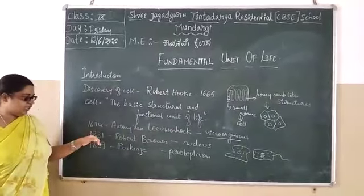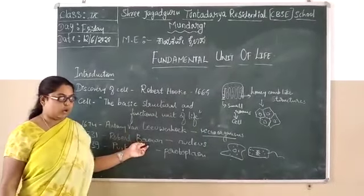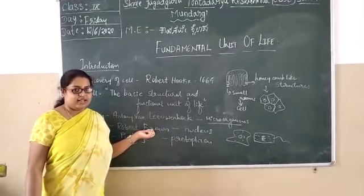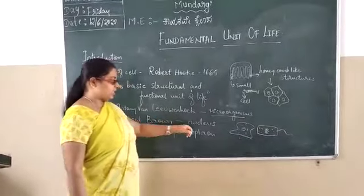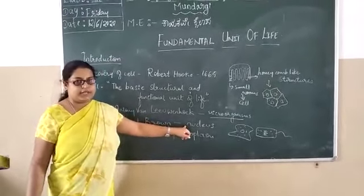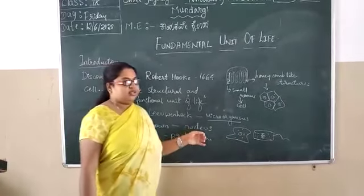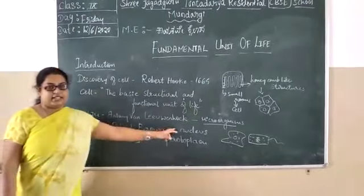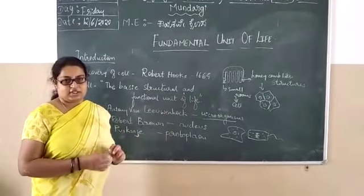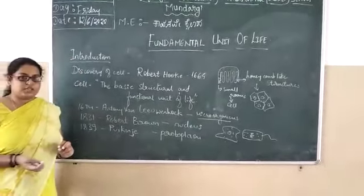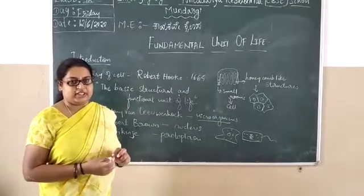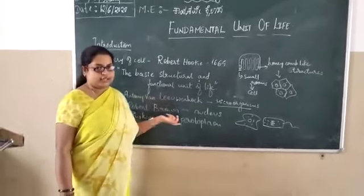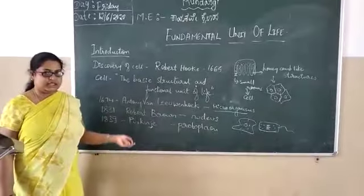Later, in the year 1831, another scientist named Robert Brown introduced a main component of the cell — the nucleus, which is like the brain of the cell and controls all the activities taking place inside it. The nucleus contains small thread-like structures called chromosomes. Those chromosomes contain genetic material that transfers parental characters from a parent to the next new organism of their own kind, and they are involved in the continuation of generations.